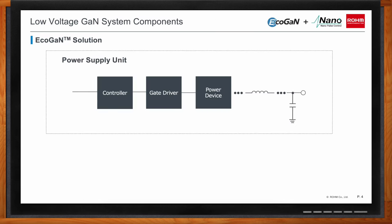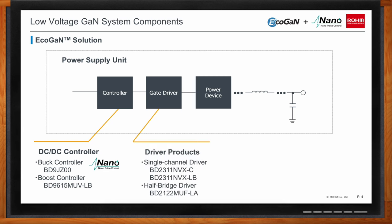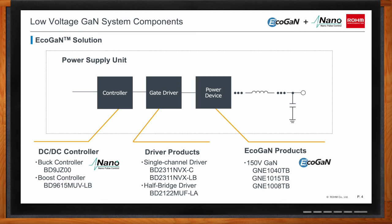Let's get into the details of the EcoGaN — what kind of components are we looking at for this solution? Rome can provide a complete application solution. Every product on this slide is a new offering from Rome. The DC-to-DC controllers on the left include our Nano Pulse Control that supports high speed switching. In the middle are our single channel and half bridge gate drivers, and on the right are the 150-volt low voltage discrete EcoGaN devices.